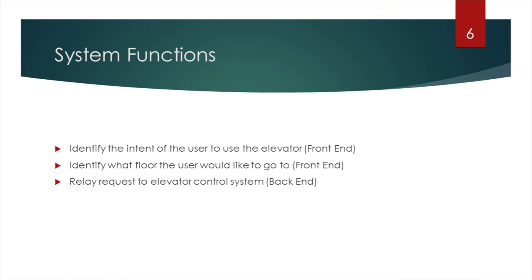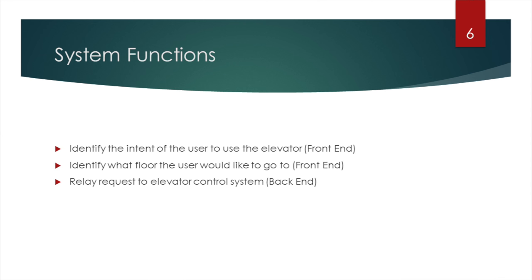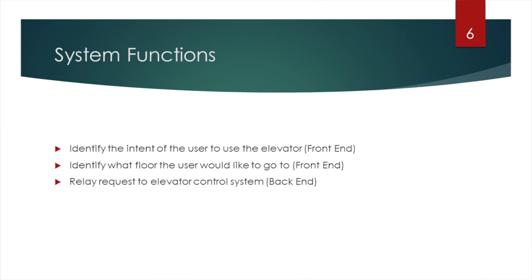We identified three primary system functions split into two areas: front-end and back-end. For the front-end, we needed to identify that a user wanted to use the elevator, and also identify their specific floor choice. Then in the back-end, we needed to relay that specific floor choice to the elevator control system to make the elevator operate.